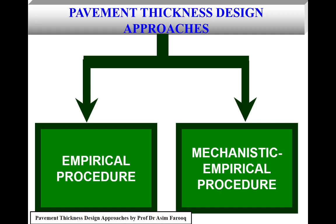There are two main thickness design approaches. Number one is the empirical procedure, and number two is the mechanistic empirical procedure. The empirical procedure is a process through which a hypothesis is tested using empirical evidence — direct or indirect observation and experience. When we talk about the mechanistic approach, it seeks to explain phenomena through reference to physical causes.